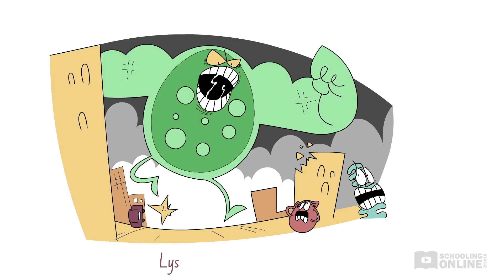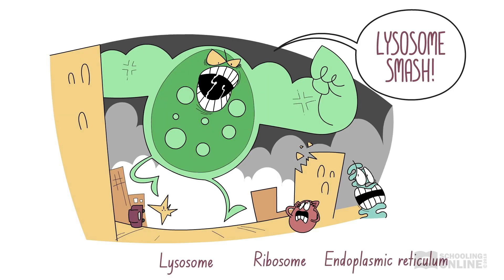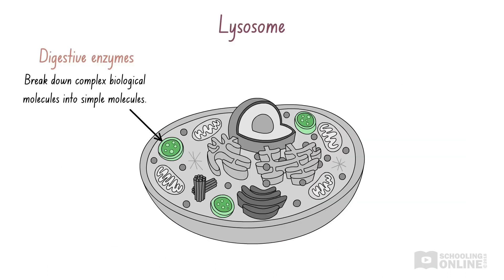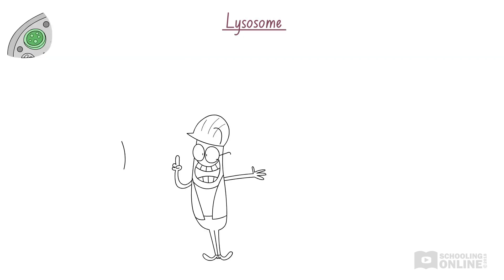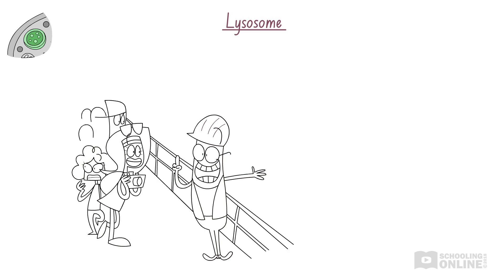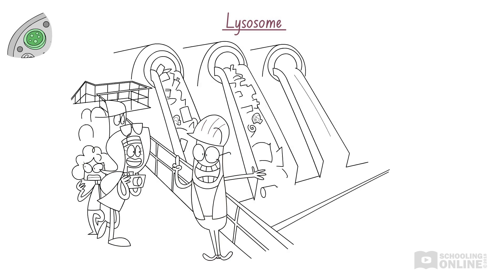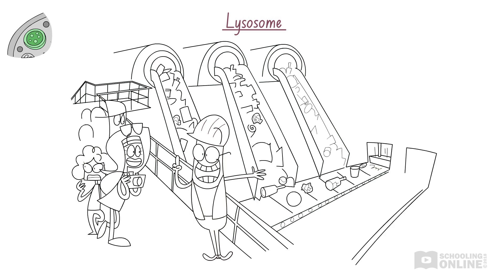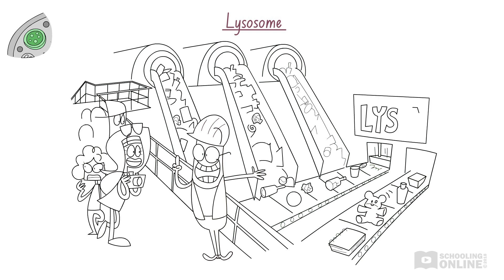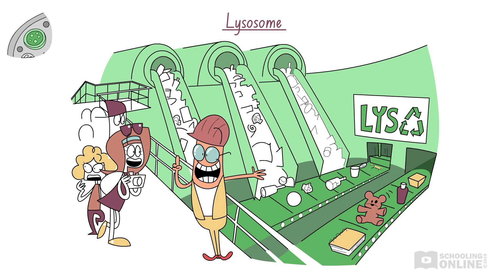Lysosomes specifically degrade waste material and unwanted foreign matter that enters the cell. This includes destroying old and damaged cells from the inside. Sally and her classmates arrive at the Zoo York Recycling Plant, where waste materials, including paper, plastic and soda cans, are collected from around the city. The recycling plant breaks down these materials and reprocesses them to make brand new products. Lysosomes are like the recycling plant of an animal cell — they break down unwanted biological molecules, like proteins, into simpler molecules that can then be used to synthesise useful materials for the cell.